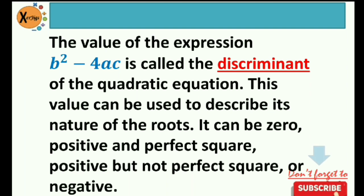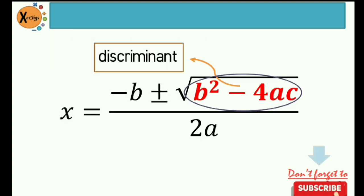The value of the expression b squared minus 4ac is called the discriminant of the quadratic equation. This value can be used to describe the nature of the roots. It can be 0, positive and a perfect square, positive but not a perfect square, or negative. Your discriminant is part of your quadratic formula.